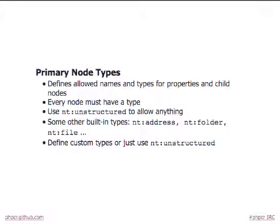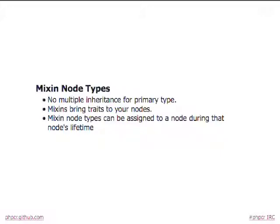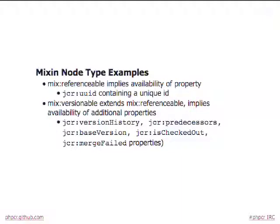There's a concept called primary node types. Every node must have one, and it acts like a schema definition — you can mandate specific properties and child node types. You must choose a primary node type and cannot change it after the node is created. However, there's another concept called mix-ins, which you can add and remove later. One example is 'referenceable': once you make a node referenceable, it automatically gets a UUID, and you can remove that mixin later. Same with versioning — you can make a node versionable after creation and remove it later. You can add your own mixin types and primary node types, and extend from existing ones.